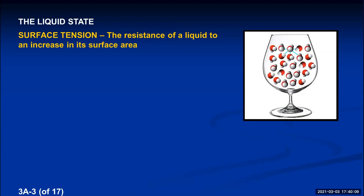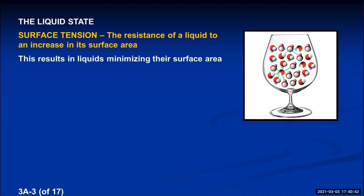So the molecules always arrange themselves so the majority can be in the interior and the least number are on the surface. This results in liquids minimizing their surface area. The stronger the attractive forces between liquid particles, the stronger their surface tension will be.